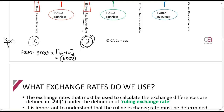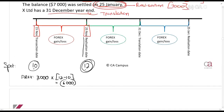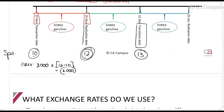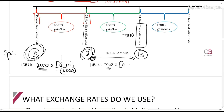At year-end (the translation date), the rate is R13. Only $7,000 remains outstanding. The rate was last recognized at R10 for this portion, so the forex loss is $7,000 × (R13 − R10) = R21,000. Note that the R12 rate only applies to the $3,000 already realized — the $7,000 was last recognized at R10, so you use R10 as the base.